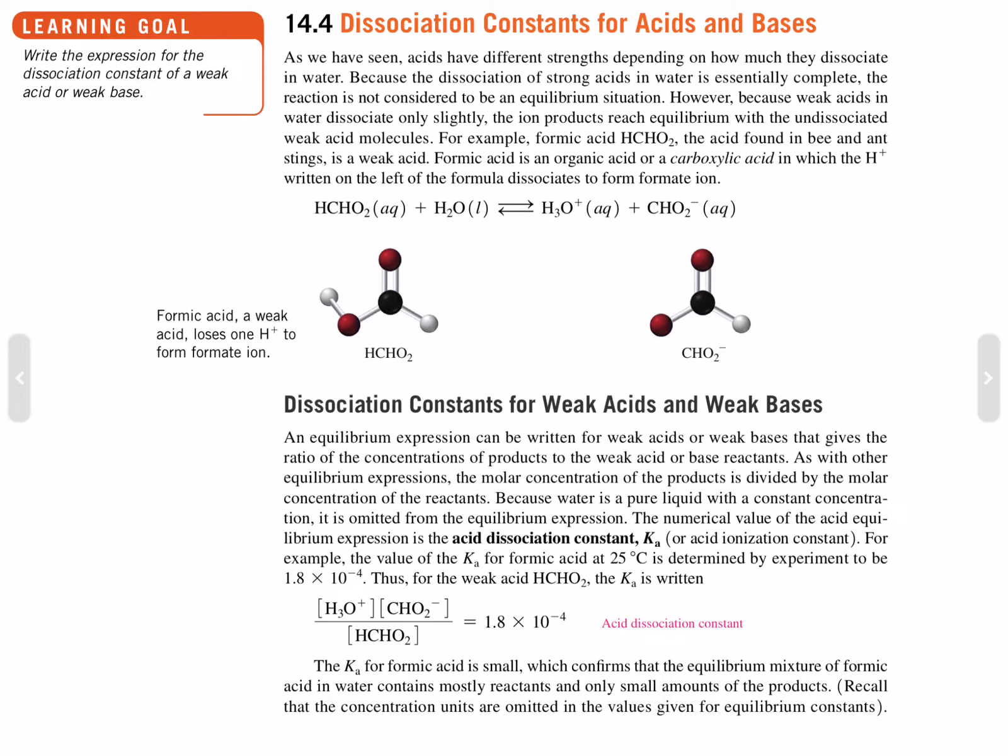The numerical value of the acid equilibrium expression is an acid dissociation constant, or K sub A. For example, the value of K sub A for formic acid at 25 degrees Celsius is determined by experiment to be 1.8 times 10 to the negative 4. Thus, for the weak acid HCHO2, formic acid, K A is written: